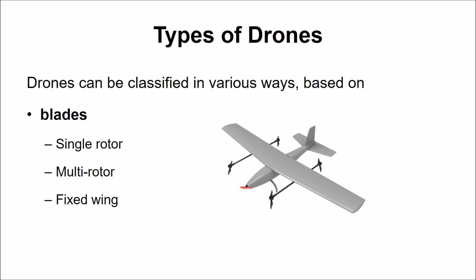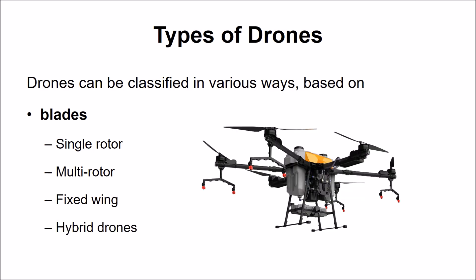Fixed wing drones, as the name implies, have fixed wings like a traditional aeroplane. They don't have any vertical takeoff ability and cannot hover. However, since they only need energy to propel forward and not hover, they are very energy efficient and faster moving than rotating drones. The final type is hybrid drones, which combine fixed wing drones with vertical lift rotors. They have the ability to take off vertically and then move forward with fixed wings, making them versatile and ideal for commercial applications.